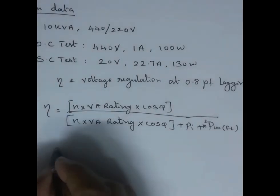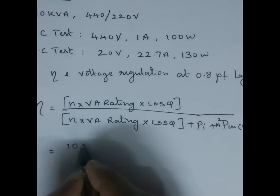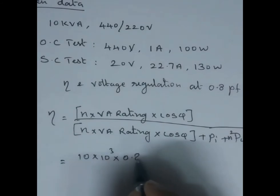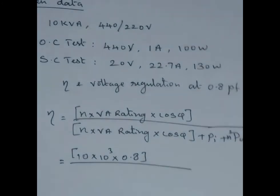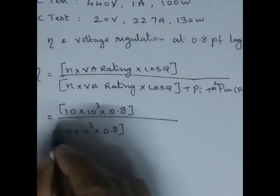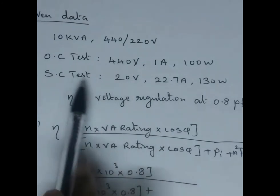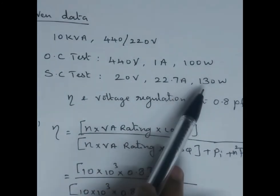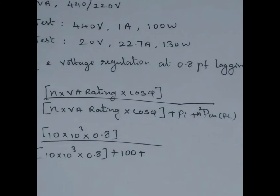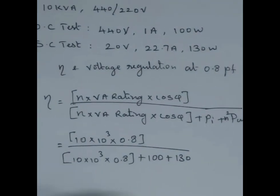With n = 1, VA rating is 10 × 10³. Power factor is 0.8. The denominator also has 10 × 10³ × 0.8. Iron loss is taken from the OC test as 100 W, and copper loss is taken from the SC test as 130 W. Since n = 1, n² = 1, so we take copper loss directly as 130 W.